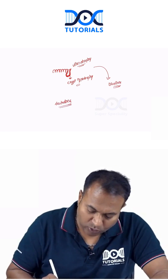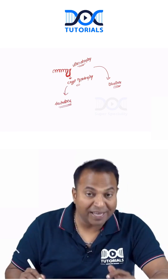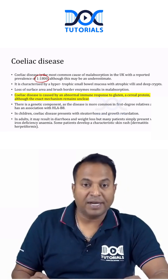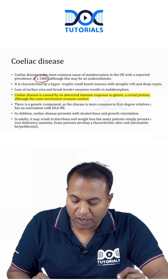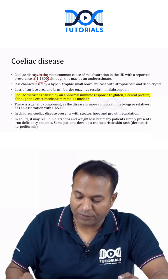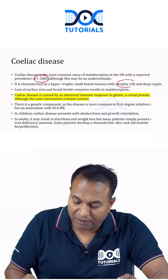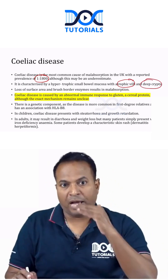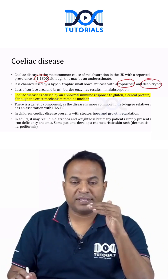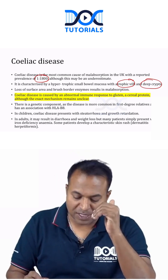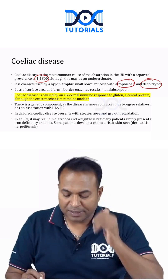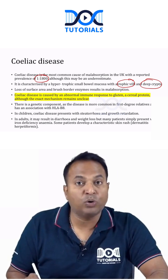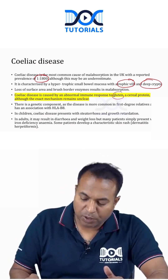In adults, there is more diarrhea and malabsorption. Celiac disease is characterized by hypertrophy of the small bowel mucosa with atrophic villi and hypertrophied deep crypts. Loss of surface area and brush border enzymes results in malabsorption.